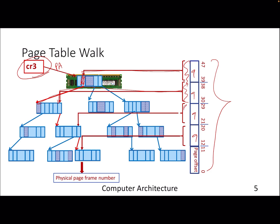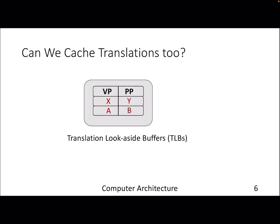This process continues and finally we get a physical page after accessing DRAM four times. Even just to complete address translation we are accessing DRAM four times, and this translation process also goes through the cache hierarchy — we look for translations in caches first, and only if not found do we go to DRAM. To mitigate this page table walk latency, we can have a cache that stores these translations — recently used mappings stored in a buffer called the TLB.